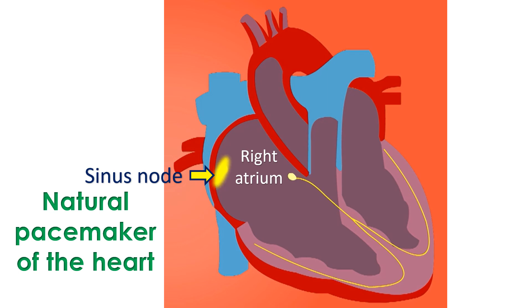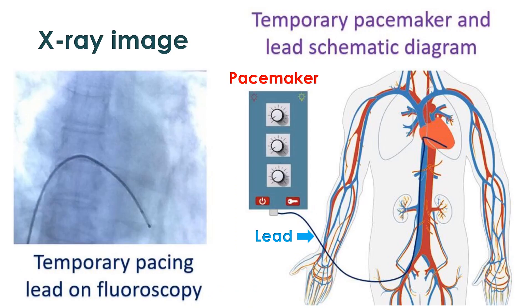The right atrium is the upper right chamber of the heart. Temporary pacing is done using an external device known as a temporary pacemaker, which is an electronic device that can give regular electrical pulses to the heart.